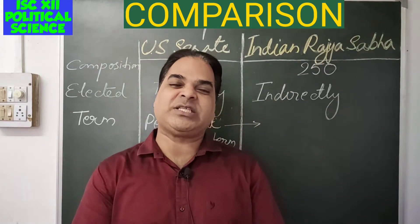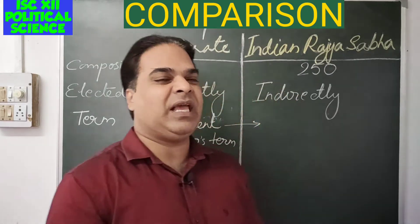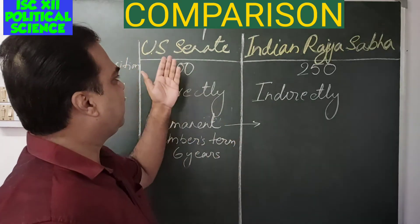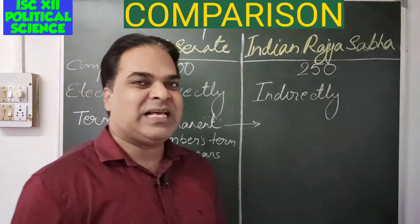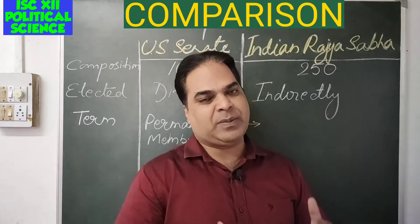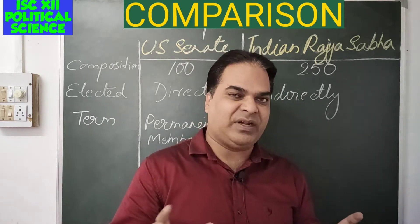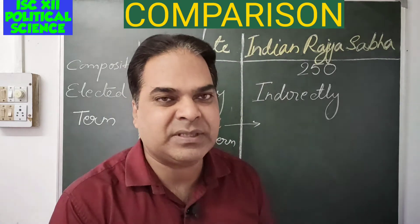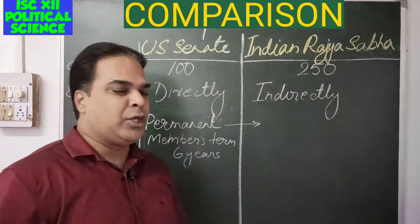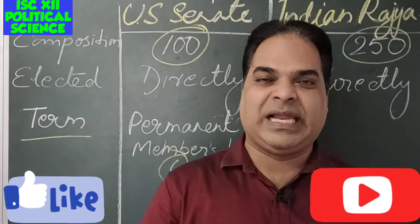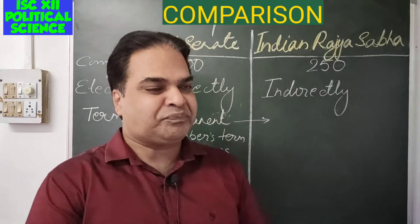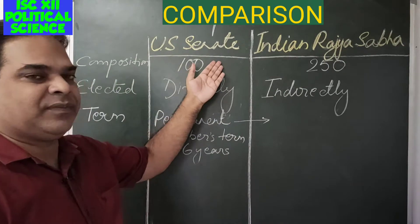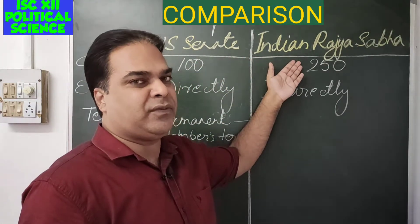Welcome to another virtual class of political science. Today we'll be doing a comparative study between the US Senate and the Indian Rajya Sabha. In the previous class, I already discussed the powers and functions of Lok Sabha, Rajya Sabha, House of Representatives, and the Senate separately. Both these houses are the upper houses of their respective parliaments — the US Senate is the upper house of the US Congress, and the Indian Rajya Sabha is the upper house of the Indian Parliament.